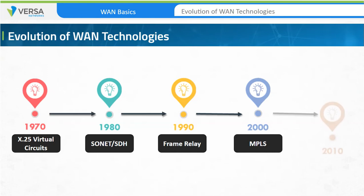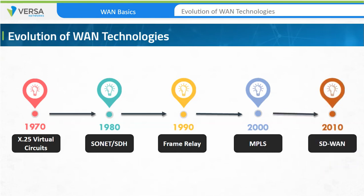The next phase in WAN evolution was towards Hybrid WAN and Software-Defined WAN. This was more focused on automation and agility to simplify WAN operations and management. Hybrid WAN empowers enterprises to make optimal use of their WAN resources, providing feature-rich, intelligent traffic steering and traffic conditioning to enhance the end-user experience.